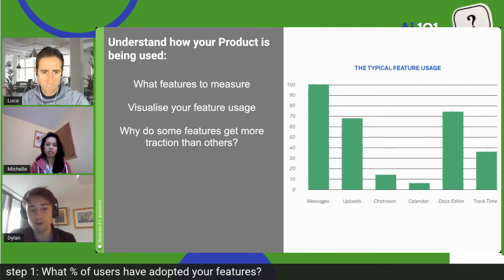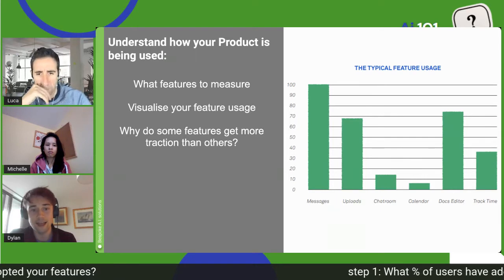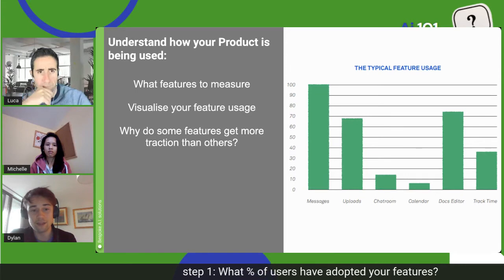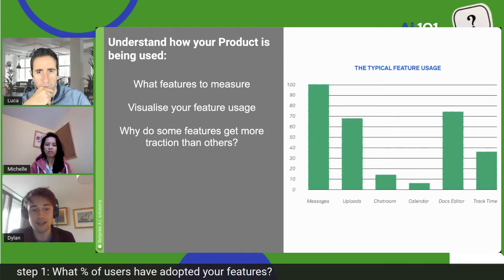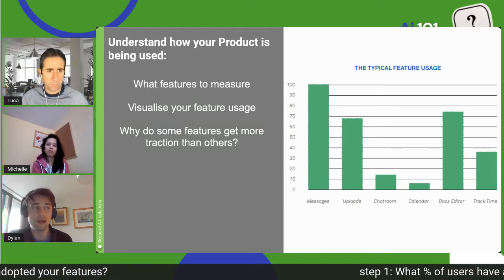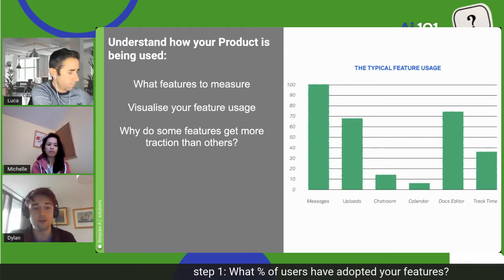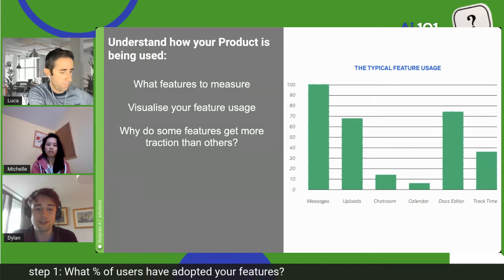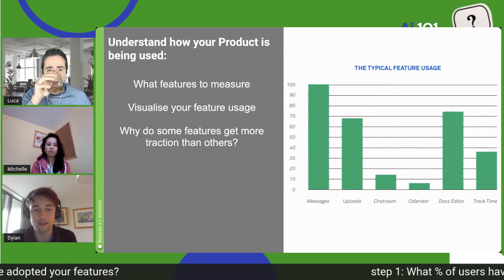This graph does not show the most ideal scenario. In a perfect world, all features would be loved and used constantly by all clients. More realistically, there are core features — the ones you started with, your competitive advantage, the ones you market more — and there are many reasons why some features are more heavily used than others.